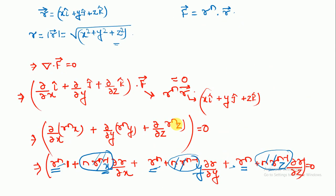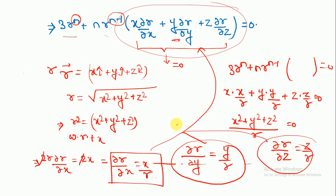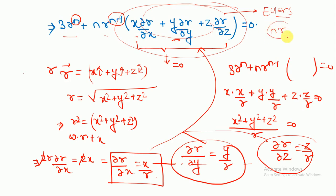I would also like to mention that you can apply the homogeneous Euler's method here — treating r as a homogeneous function of degree one. By Euler's theorem: x·(∂r/∂x) + y·(∂r/∂y) + z·(∂r/∂z) = n·r, where n is the degree and r is the vector magnitude. I assumed you hadn't read about homogeneous functions yet, so I solved it through the vectorial method.